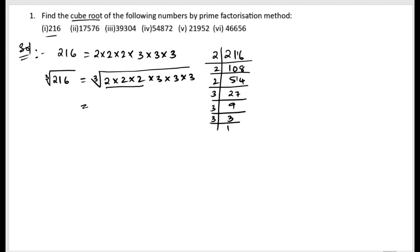Here we are having three twos and also three threes. So for the cube root, we can take a single 2 and a single 3. Two times three is six. Hence, the cube root of 216 is 6.